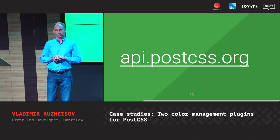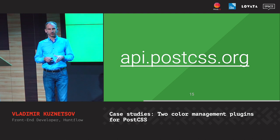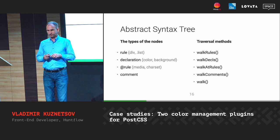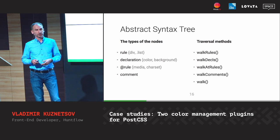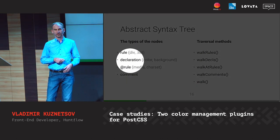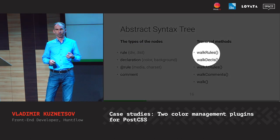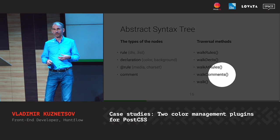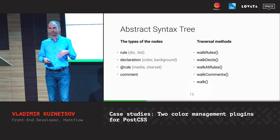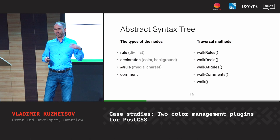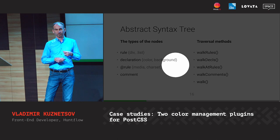I'd like to highlight the PostCSS documentation link — it has full documentation and many examples for using concrete methods. There are only four types of nodes: rules, declarations, at-rules, and comments. And there are relevant methods to walk through rules, declarations, at-rules, and comments. You can walk through all nodes regardless of type. Since all colors are in declarations, we only need to use one method.